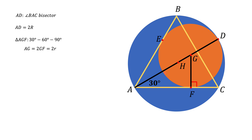The diameter of the large circle AD consists of AG, which is 2r, plus segment GD, which is the radius of the small circle, 1r. So total AD equals 3r. Previously we showed AD equals 2R, and now we show AD equals 3r, which means the ratio of the large radius to the small radius is R/r = 3/2.